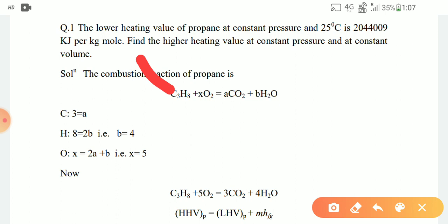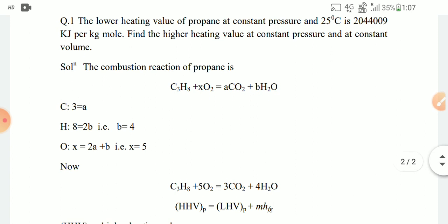Now I am going to balance hydrogen on both sides. On the left hand side hydrogen is 8 and right hand side is 2 into B. That means B you can find is 4.